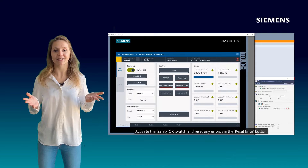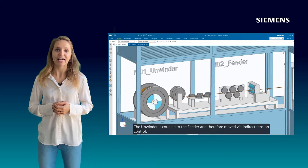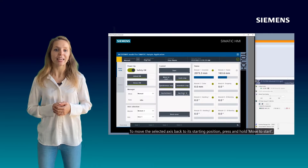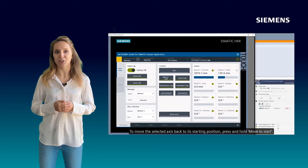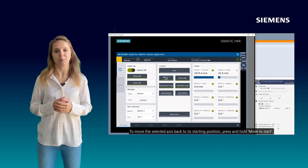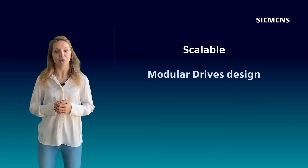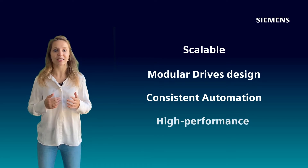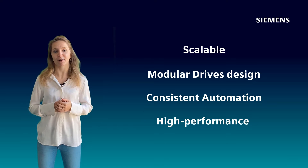The application is completely operated by HMI runtime. The complete line for the production of a hairpin machine can be moved either in automatic cycle, or individual modules can be jogged to a starting position. Scalable and modular drive designs, consistent automation, and high-performance hardware and software is our secret recipe.